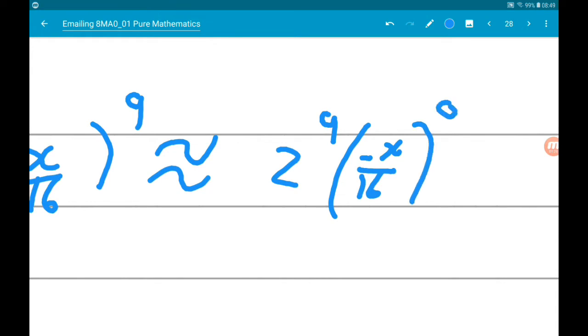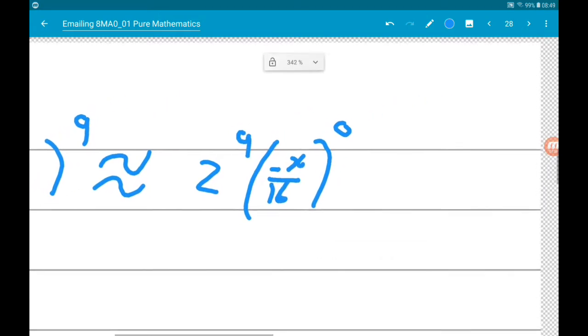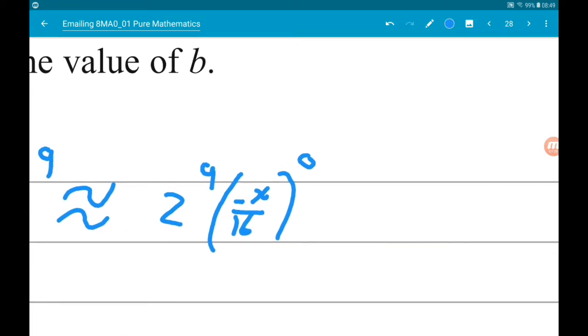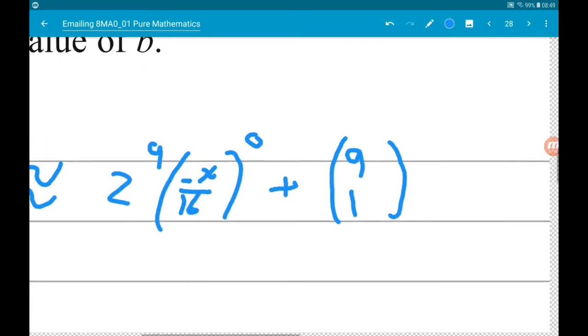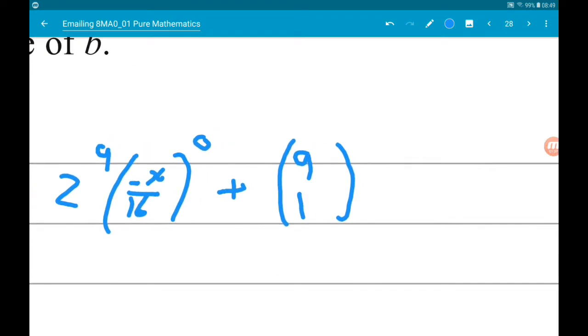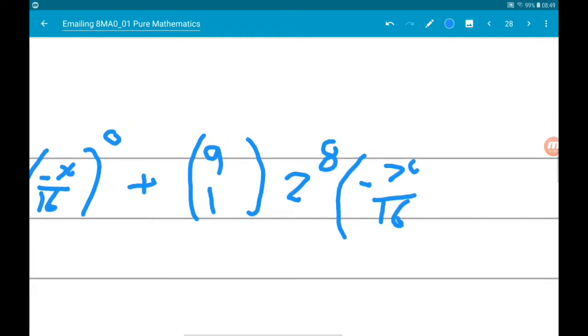Second term is the power of 9, so 9 to the power of 1. Now the power of 2 goes down by 1, so that's now going to mean 2 to the power of 8. And the power of minus x over 16 goes up by 1, so we get minus x over 16 to the power of 1.